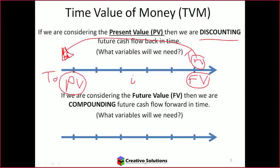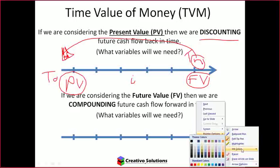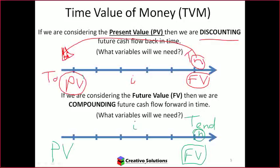The opposite is true for taking an amount forward — compounding. I look at the end value and need the present value, interest rate, and time (N). I'm calculating the FV, which is right at the end. In discounting, I was trying to get the PV; in compounding, I'm trying to get the FV.